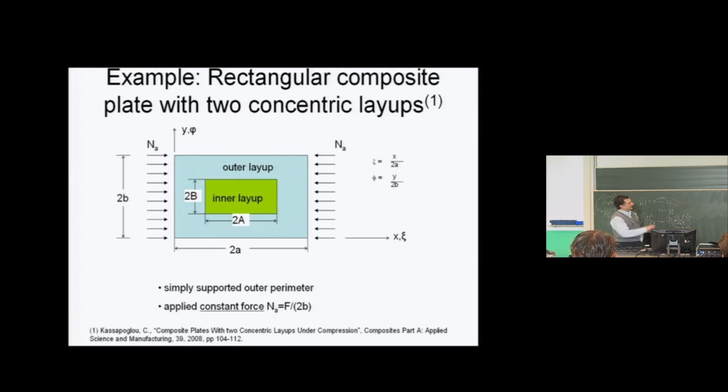It's simply supported all around here at the edges, outer edges, and we apply a constant force on one end, NA, which is the force divided by 2B. Remember, N is force per unit width, so I apply a constant force F which divided by my 2B gives me the applied NA. And we want to calculate the stresses everywhere in this plate. Why we want to do that, we'll see in 15 minutes.